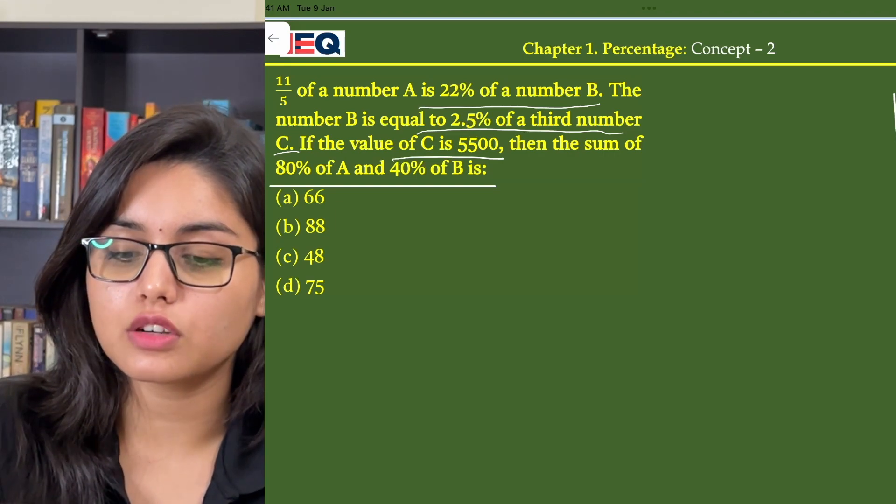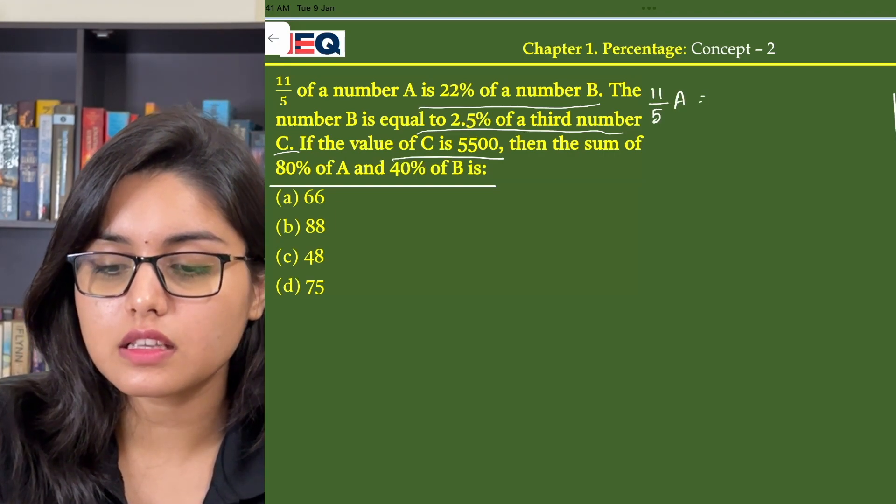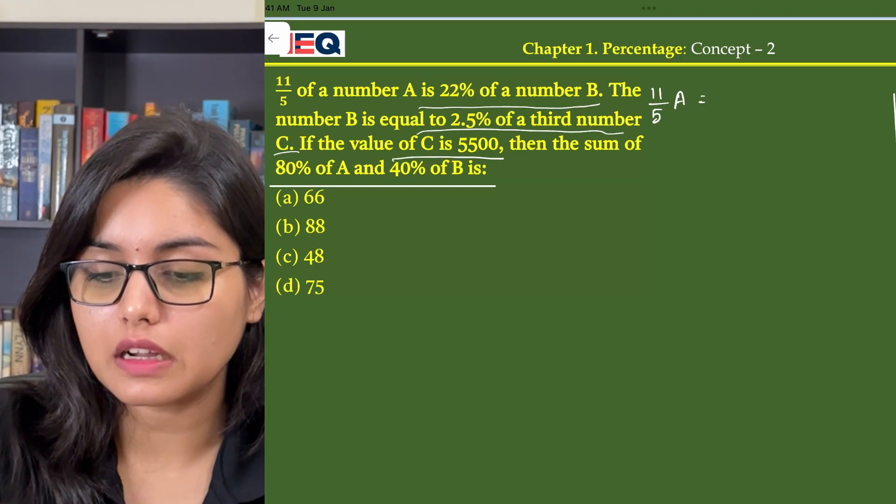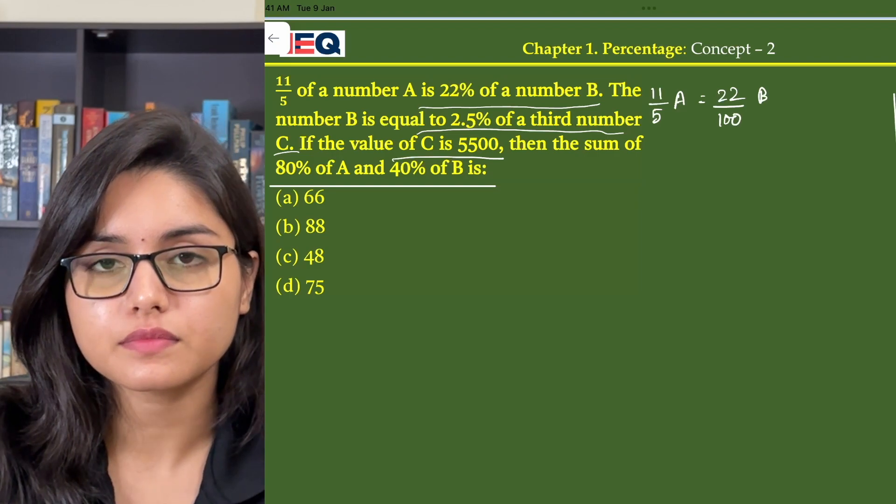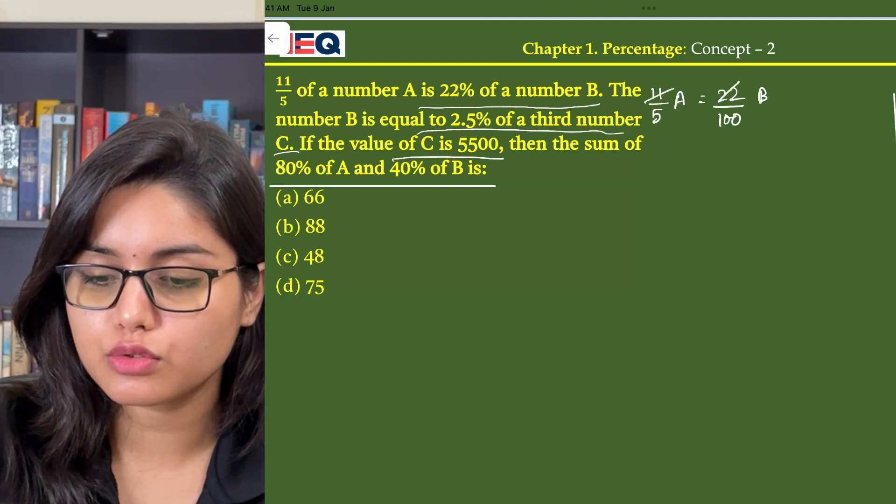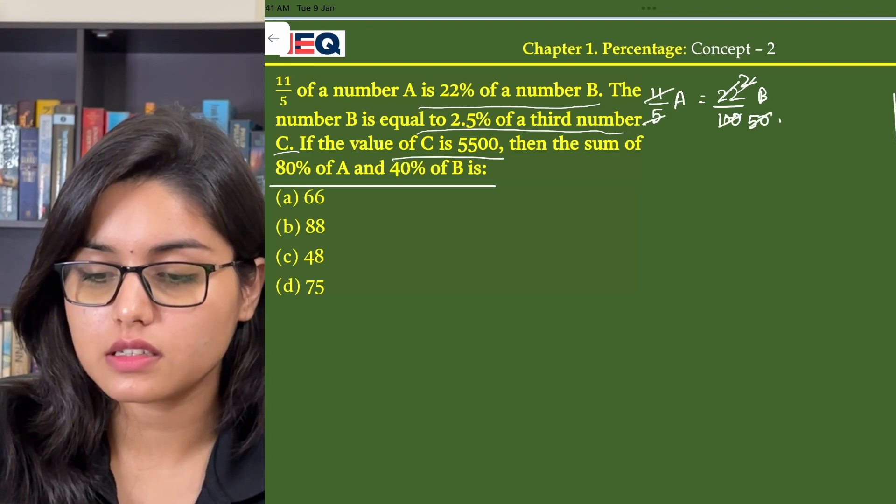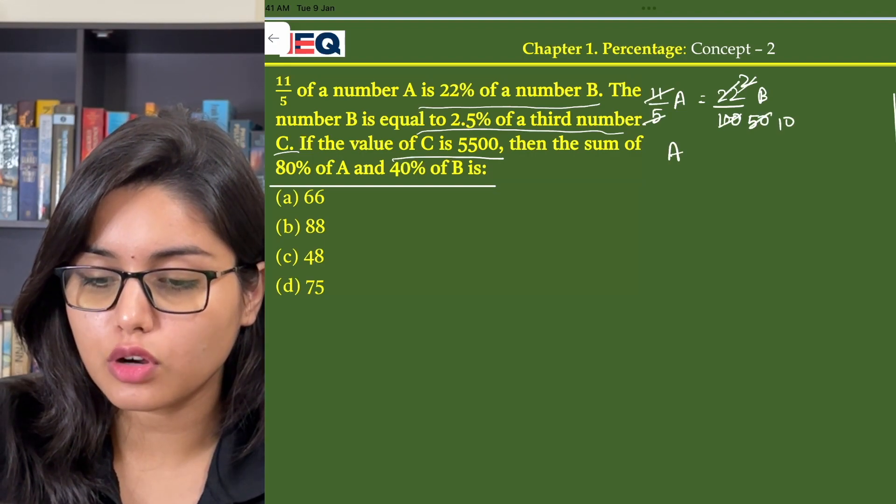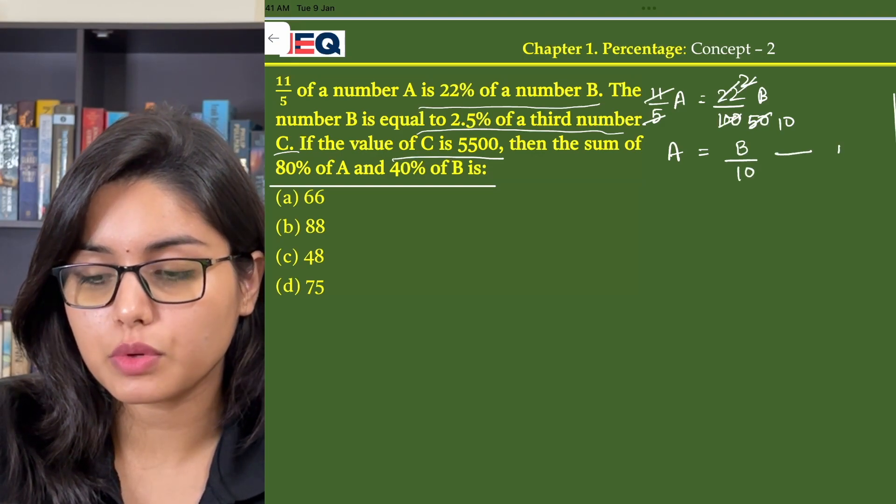So in the given question, we are told that 11 by 5 of A is equal to 22% of B, that is 22 by 100 of B. From here we get 250 and 10. So from here we got A is equal to B by 10, that is our equation number 1.